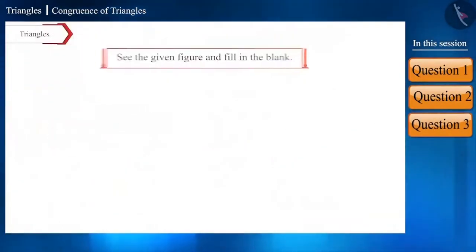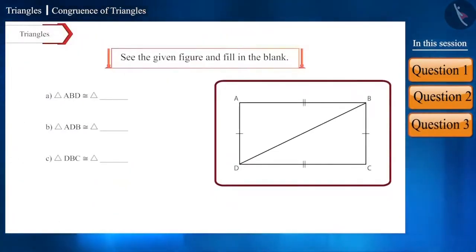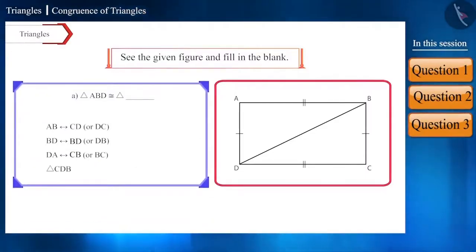Let's take the next question. Two triangles are made in the given rectangle and the names of some triangles are also given. Give the names of the triangles congruent to side AB.